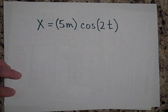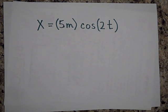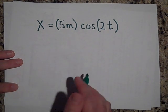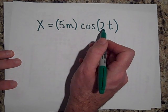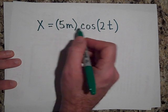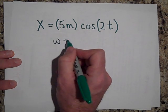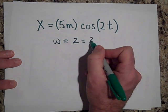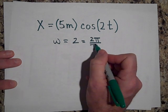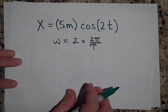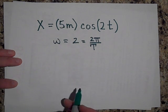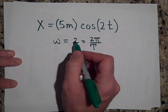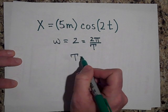Can you tell me what the period of this motion will be? The period is related to the 2 here, because this 2 is omega, since it's cosine(ωt). So if omega equals 2, that equals 2π over the period. That means the period, if I swap T with the 2, is about π seconds.